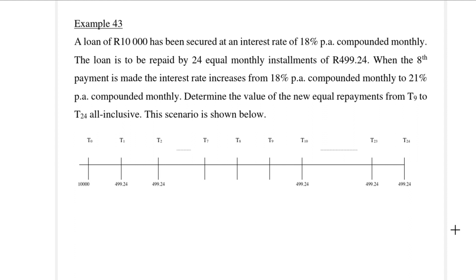We're going to do that through Example 43. Similar to Example 42, where we looked at missed payments, now we're looking at a change in interest rate. We have a loan of R10,000 at an interest rate of 18% per annum compounded monthly, with 24 equal payments of R499. When the eighth payment is made, the interest rate increases from 18% per annum to 21% per annum.